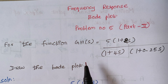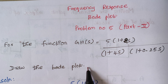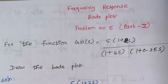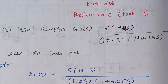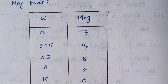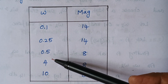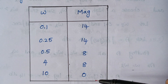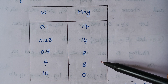In part 1 we had already found out the values for the magnitude plot and phase plot, and now we are going to mark the points on a semilog sheet. I had given the part 1 link in the description — kindly check it out, it will be very useful to understand the problem. This is our magnitude table with all the values of frequencies with respect to magnitudes. Now we are going to plot these points on a semilog sheet.